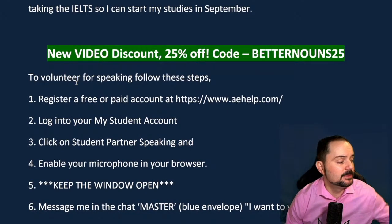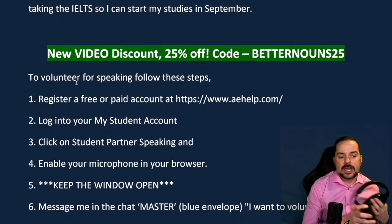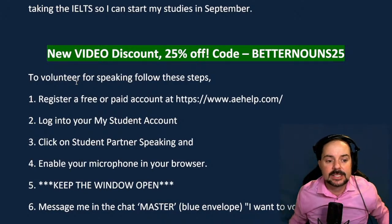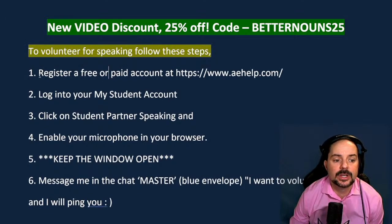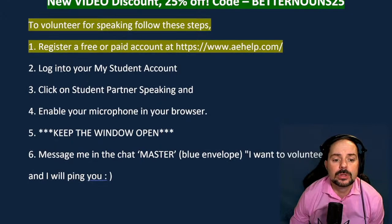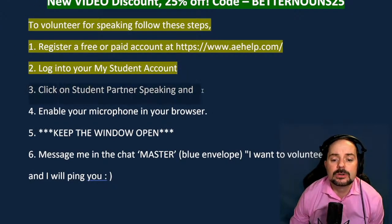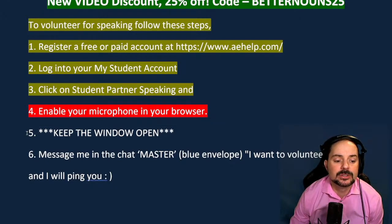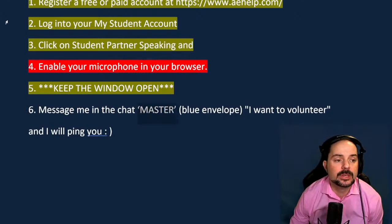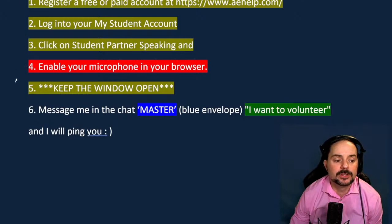We're going to have some volunteers to practice speaking Part 2. Here are the steps to volunteer: Number one, register a free or paid account at aehelp.com. Number two, log into your My Student account. Number three, click on Student Partner Speaking. Number four — very important — enable your microphone in the browser, keep the window open, and message me in the chat. You'll see me under the handle 'Master.' Just write 'I want to volunteer.'